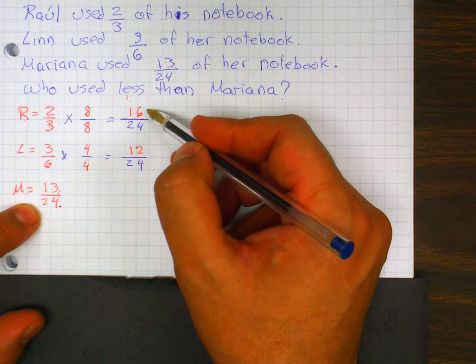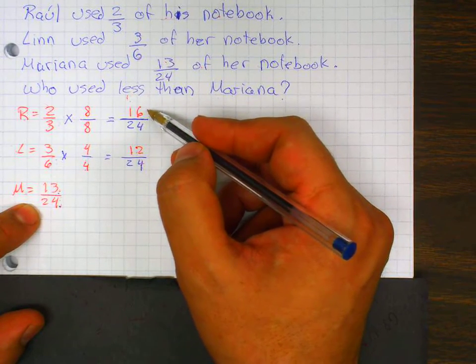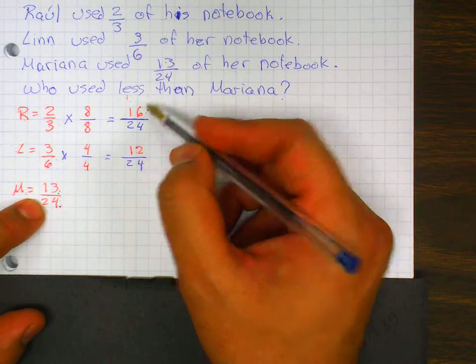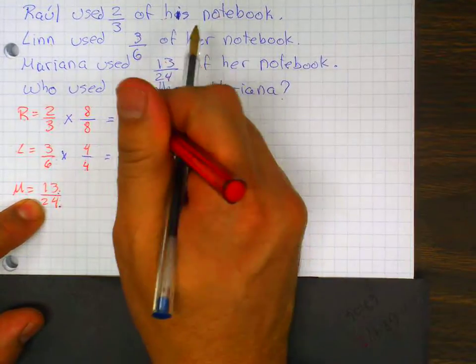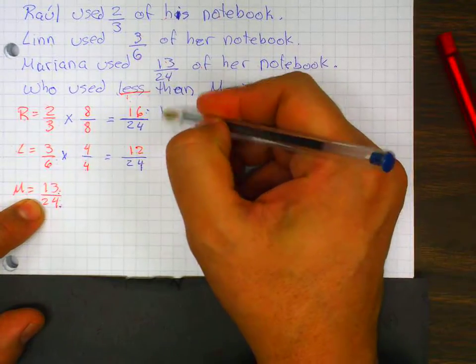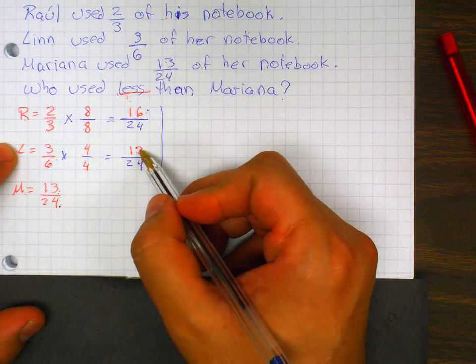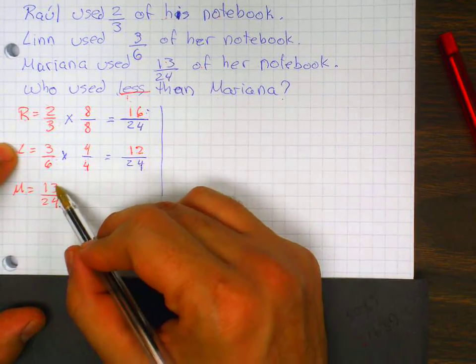Which means that Raul used more than Mariana. And the question is, who used less? So in this case, who did less than Mariana? Len, because she has twelve out of twenty-four and Mariana did thirteen.